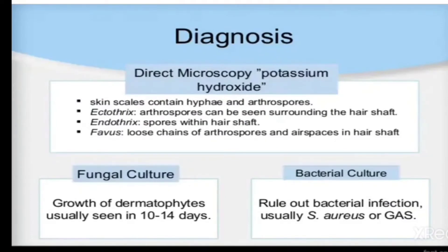Direct microscopy with potassium hydroxide: skin scales contain hyphae and arthrospores. In ectothrix infections, arthrospores can be seen surrounding the hair shaft. In endothrix infections, spores are within the hair shaft. In favus, there are loose chains of arthrospores and air spaces within the hair shaft.